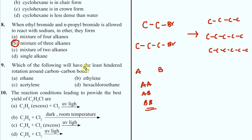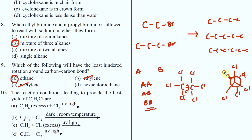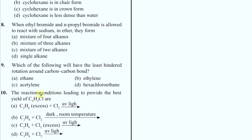Which of the following will have the least hindered rotation around the carbon-carbon bond? We want to rotate it - meaning it has to be an alkane. Is it the alkyne, the alkene? Hexachloroethane is also an alkane derivative, but this will have hindered rotation when comparing B and C with others. Ethane has only hydrogens - look at the Newman projection - this is how it will look. So this cannot rotate. The answer will be ethane.